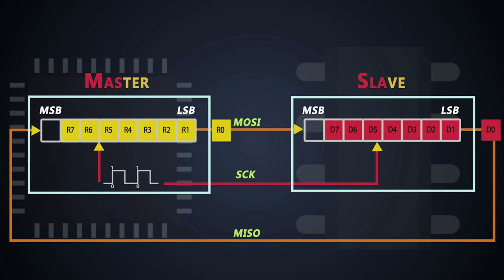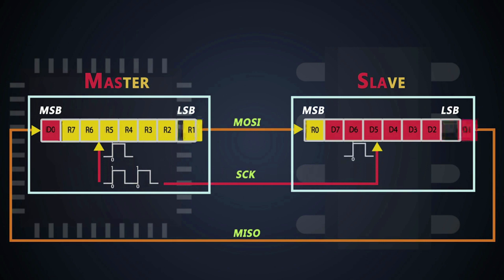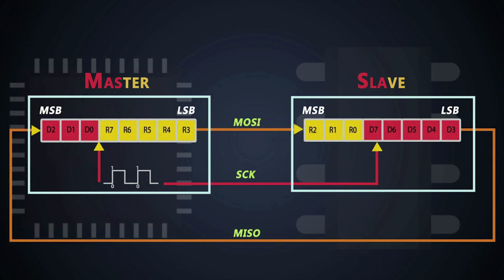The master and slave are connected in a ring, so the ejected R0 bit gets stored in the MSB position of the slave shift register, and D0 gets stored in the MSB position of the master shift register. This is how the first bit travels from master to slave and from slave to master at the same time. When the master generates the next clock pulse, the remaining bits get shifted from master to slave and slave to master. That's how each bit travels over the MOSI and MISO lines in SPI communication.